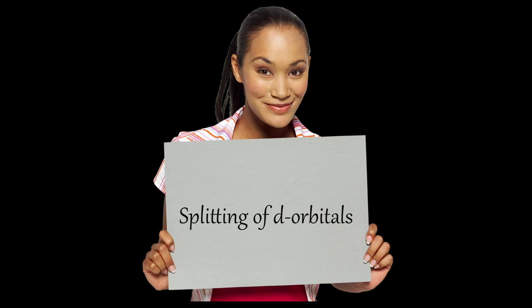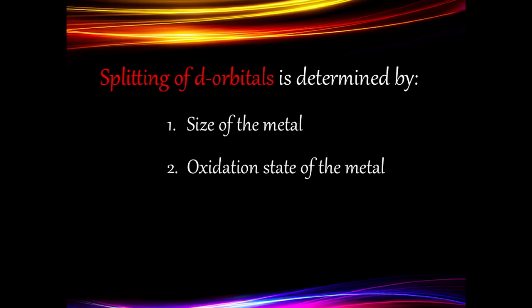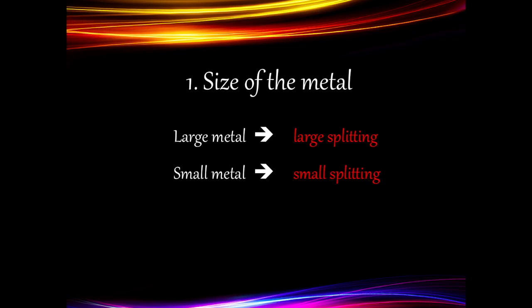The splitting of the d-orbitals depends on three things. Number one is the size of the metal. If we have a large metal, there will be large splitting, and if we have a small metal, there will be small splitting. By large splitting, we mean that delta-octahedral — the difference between the two sets of orbitals — will be large, and by small splitting, delta-octahedral will be quite small.